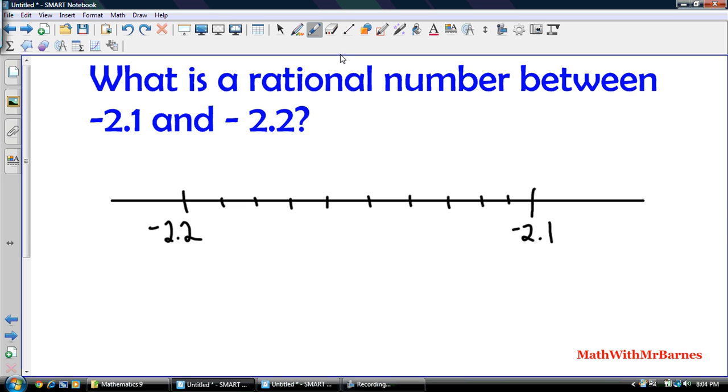Alrighty, so I broke this up into 10 different spaces. So if I want to, let me just count over one space. So I'm at negative 2.1. So I go over one space. I'm at negative 2.11. Negative 2.12. Negative 2.13. So let me just write that one there. Negative 2.13. Negative 2.14. Negative 2.15. Negative 2.16. Negative 2.17. Negative 2.18. Negative 2.19. And then negative 2.20 or 2.2.